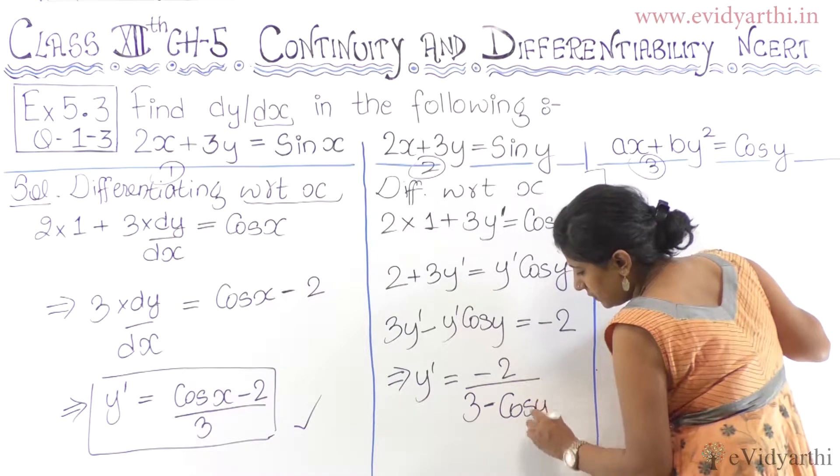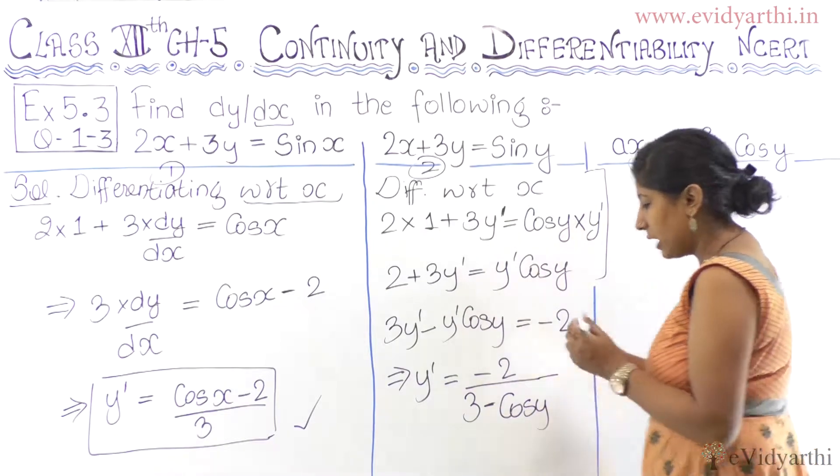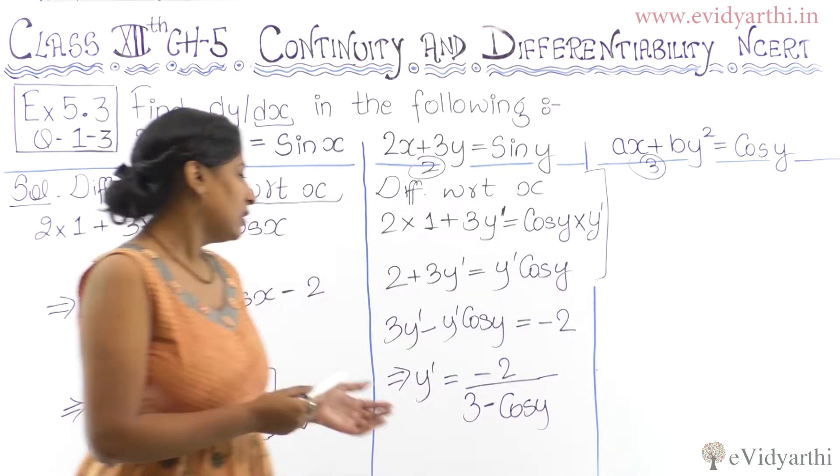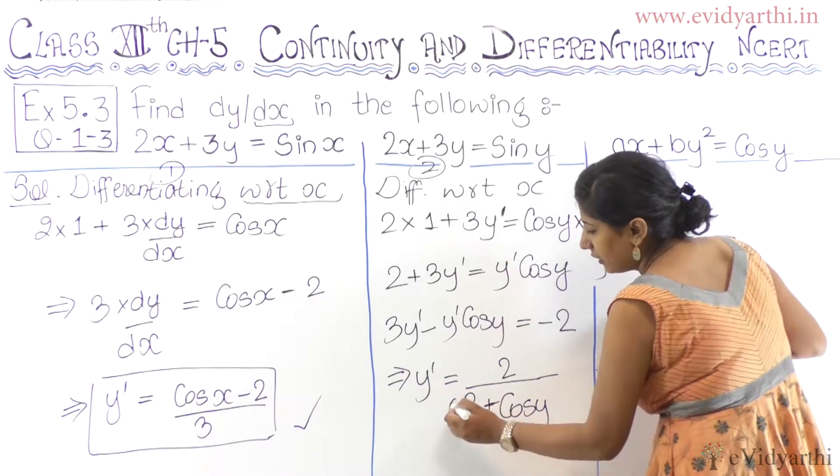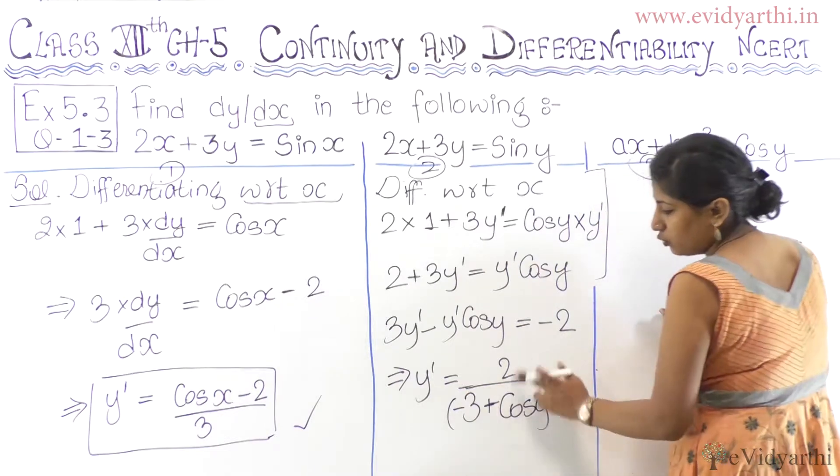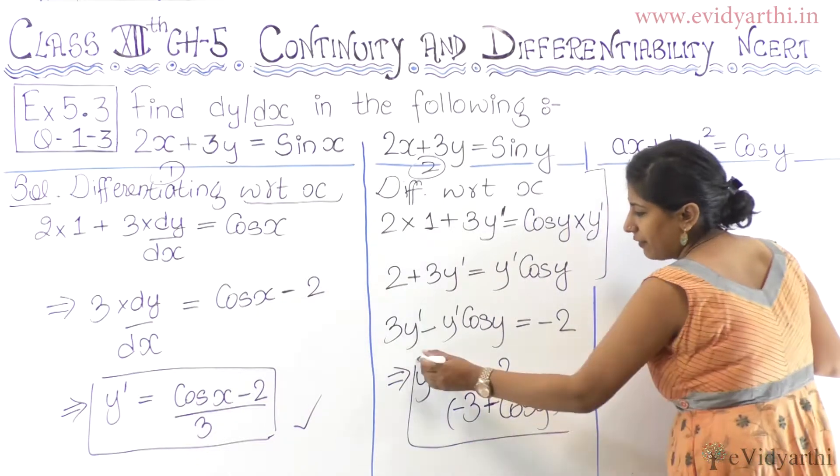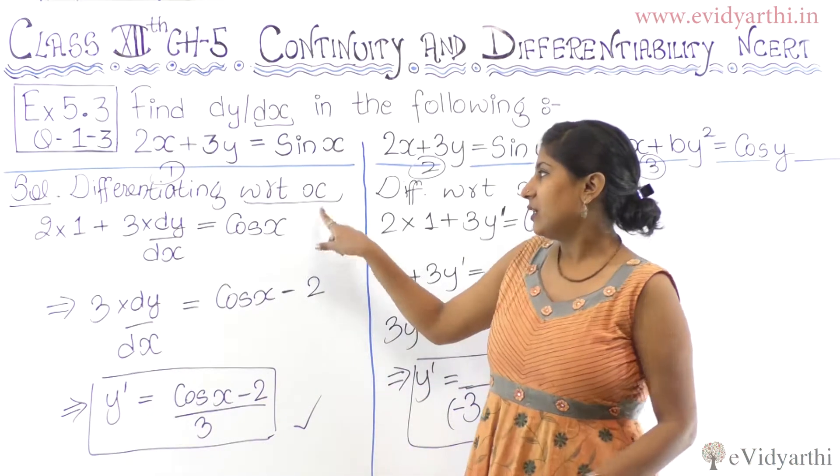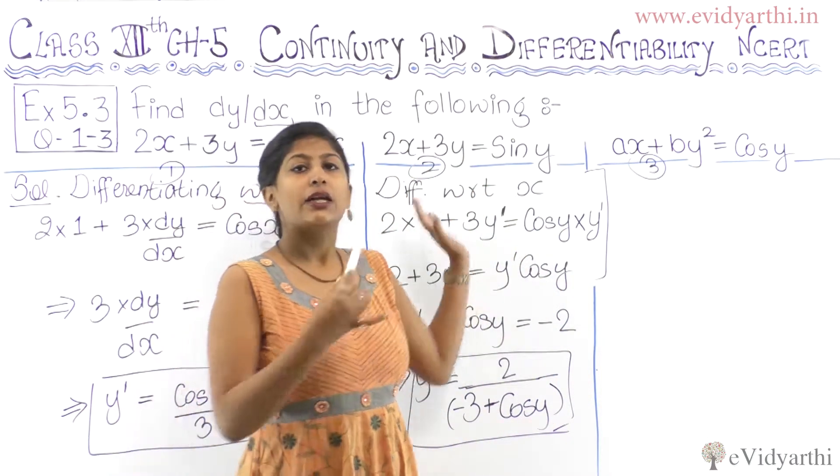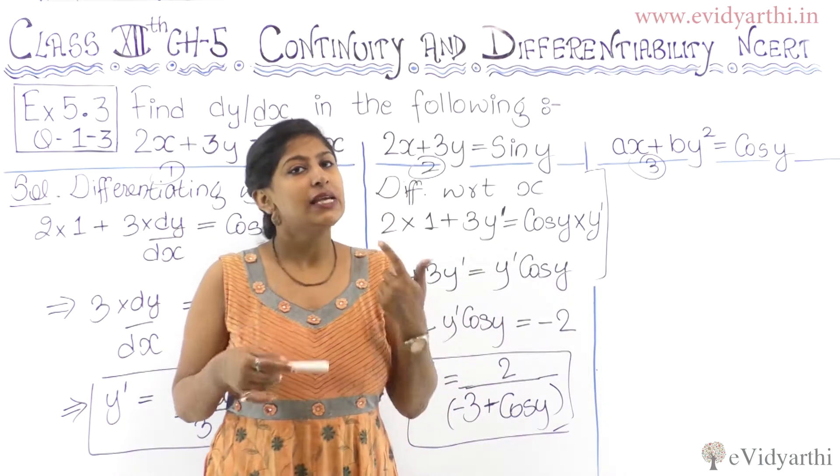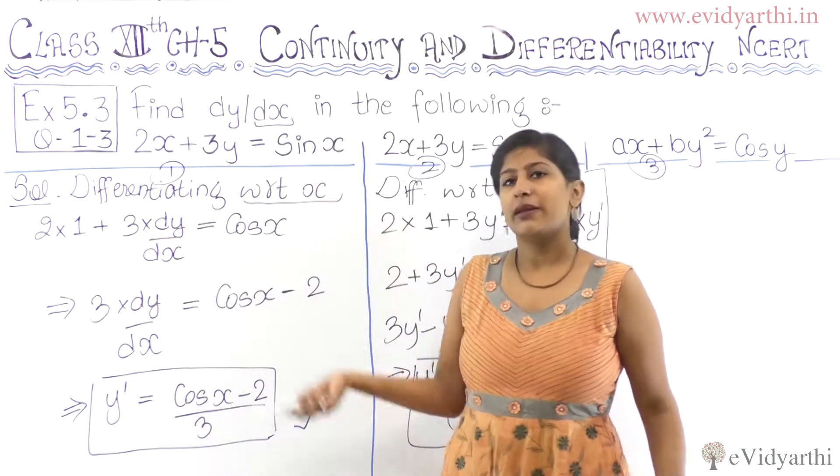If you want to show this minus and multiply, it becomes 2 upon cos y minus 3. So you can write this minus as well. This is cos x is the same, but cos y is the derivative of cos y into y', depending on which respect you have to differentiate. And x is the same as the question.